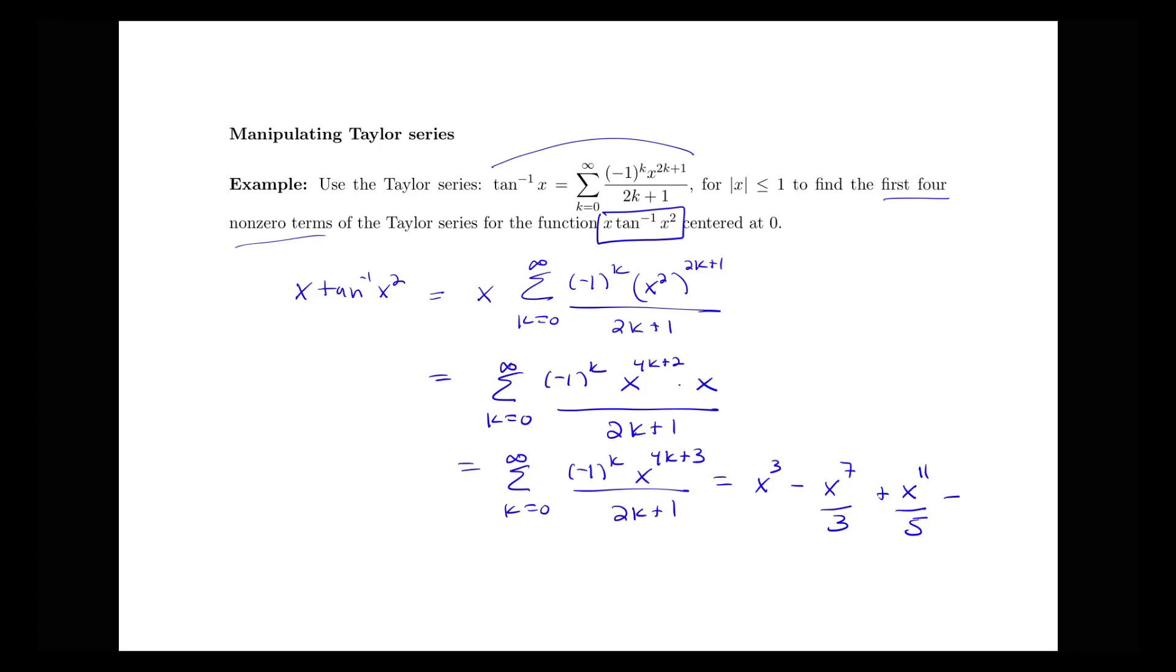And then plug in, let's see, we said 0, 1, 2, plug in 3. We'll have negative x to the 15th here. Let's see, I said we were plugging in 0, 1, 2, 3, yep, over 7 here. And then this would keep going. But we've got the first couple of terms there to see what the beginning terms of this series look like.